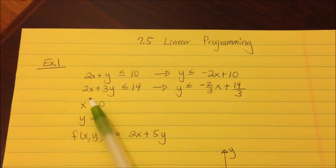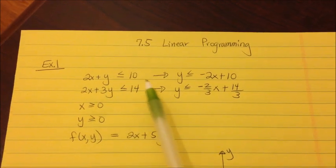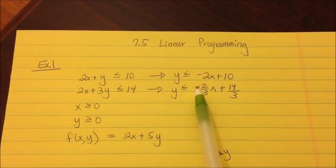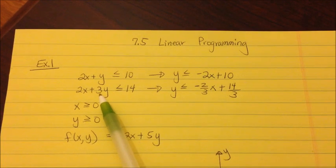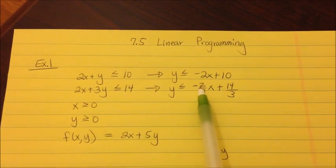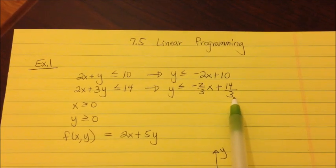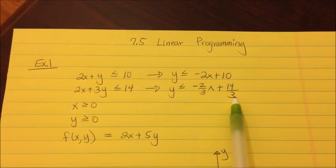For the second inequality, I'm going to subtract 2x on that side, giving me negative 2x, but I still have to divide by 3 on everything on the other side of the equal sign — that's where we get the 3.